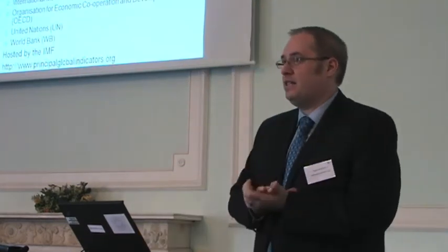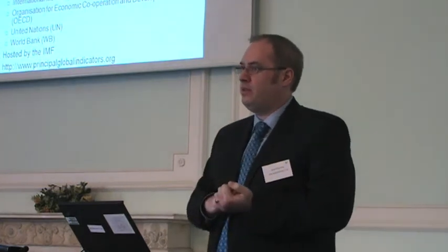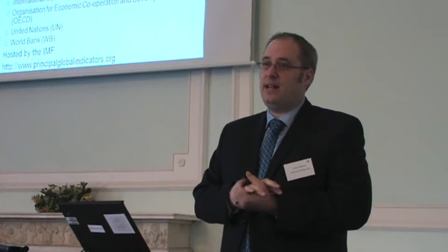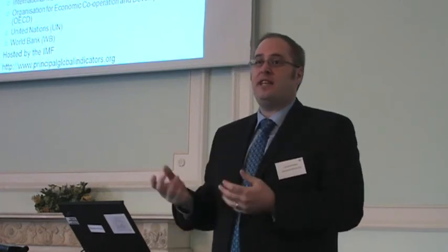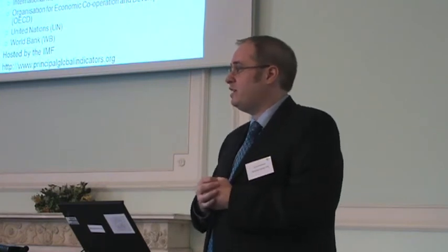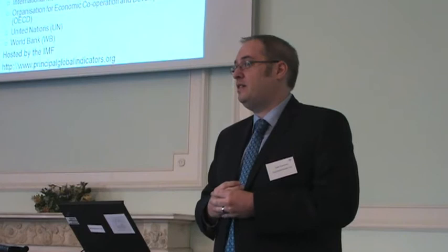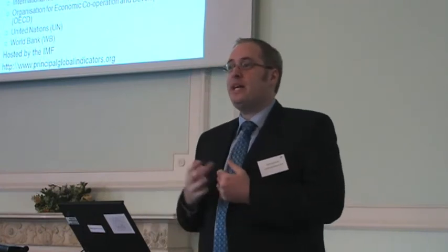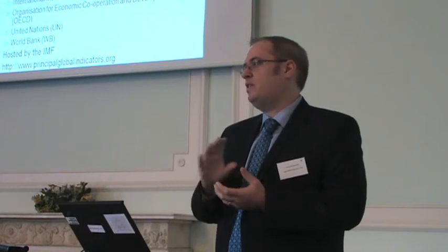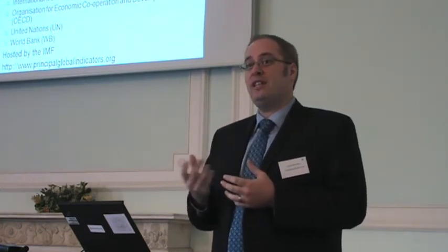There are two new tools I'd like to highlight. The first is the Principal Global Indicators website, which presents data for the G20 countries. It's an initiative of the Interagency Group on Economic and Financial Statistics — a group convened after the financial crisis — in response to G20 meetings and the identification that data gaps arose during the crisis. The seven organizations listed have been meeting regularly to coordinate data collection. The Principal Global Indicators website is an initial attempt to gather what data international organizations collect and make it as comparable as possible across G20 countries.